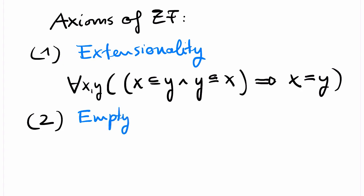The second axiom is called empty set. There exists a set that has no elements. Because of extensionality, this set, which has no elements, is unique. And we introduce a well-known symbol for the empty set to denote this element.